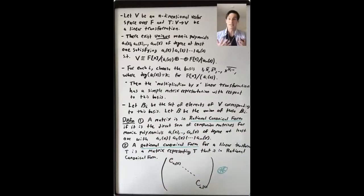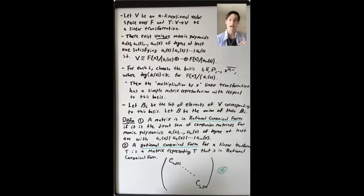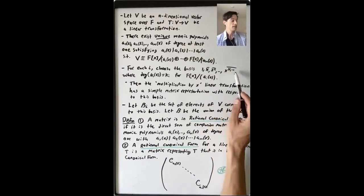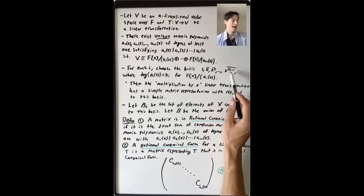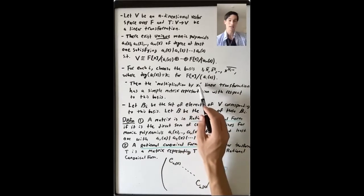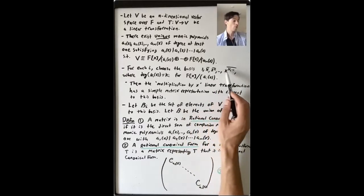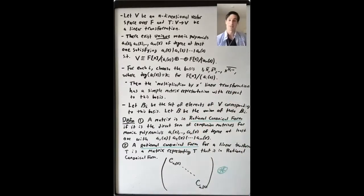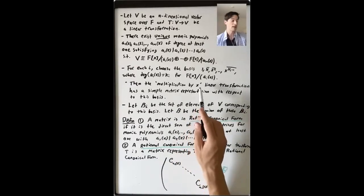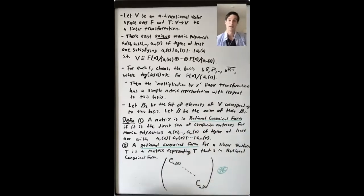The matrix representation of a linear transformation with respect to some basis has columns that tell you where each basis element is sent as a linear combination of the other basis elements. So you can see why, if your transformation is multiplication by X, this basis gives you something particularly simple — you get the companion matrix of the polynomial AI.